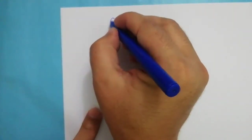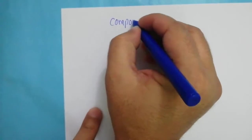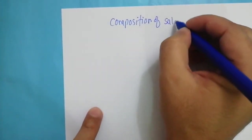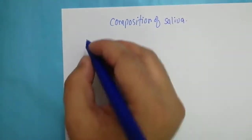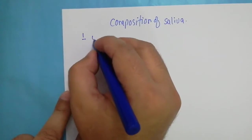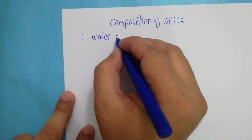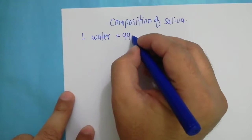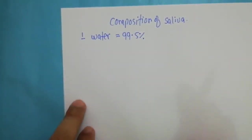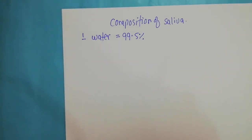In this video we are going to talk about the composition of the saliva — which components are present in it. The first and major component of saliva is water, and about 99.5 percent of the saliva is made up of water. This is the major constituent of the saliva.